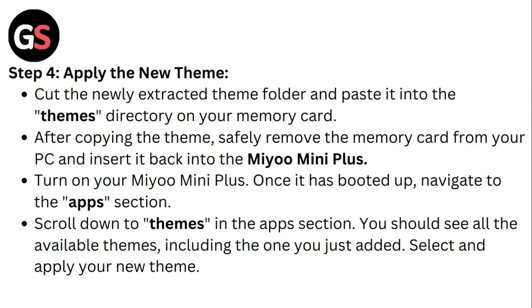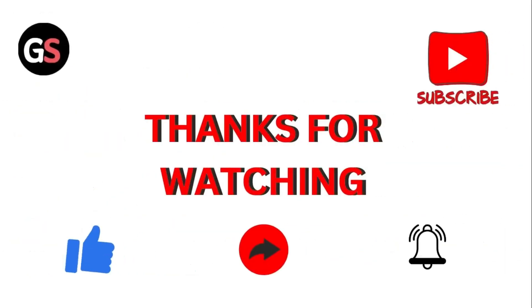Turn on your Miyoo Mini Plus. Once it has booted up, navigate to the App section and scroll down to Themes. In the App section you should see all available themes, including the one you just added. Select and apply your new theme. Thank you for watching.